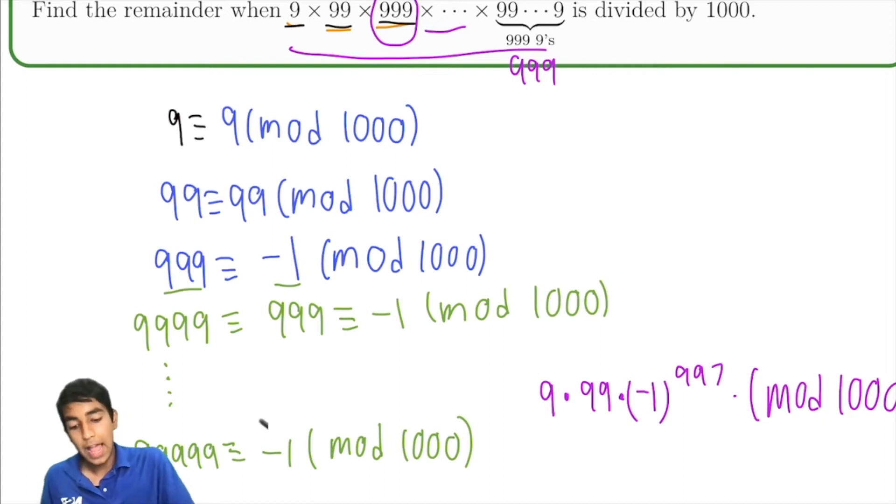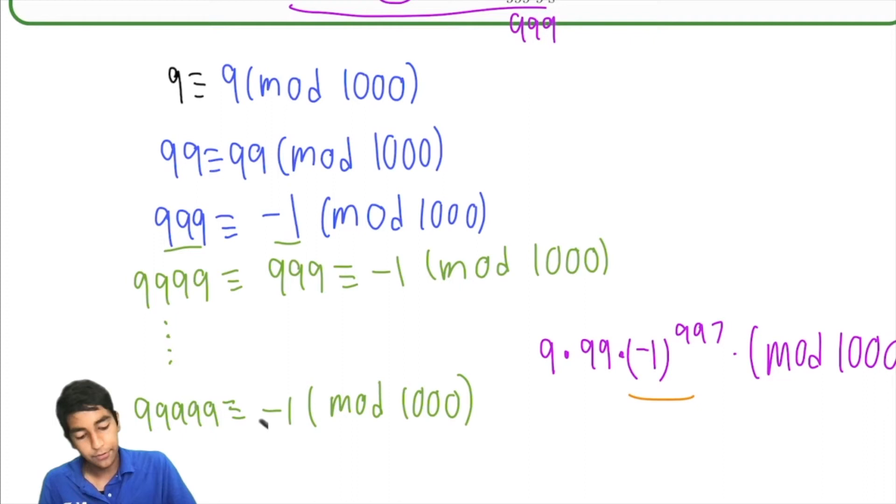Remember the exponent rule? To find the value of this mod 1,000, it's just going to be negative 1 to the power of 997, which is just negative 1 mod 1,000. So 9 times 99 times negative 1 mod 1,000, which is negative 9 times 99 is 900 minus 9, 891. So negative 891 mod 1,000.